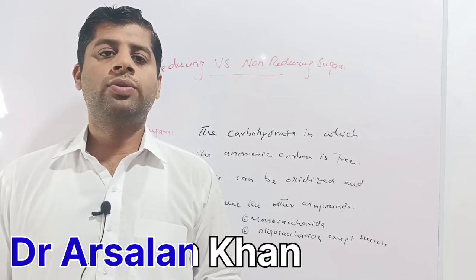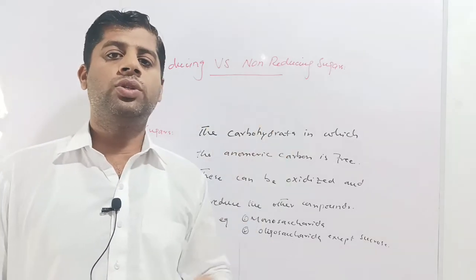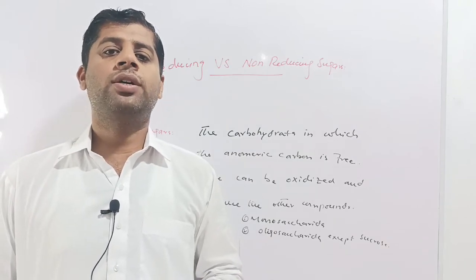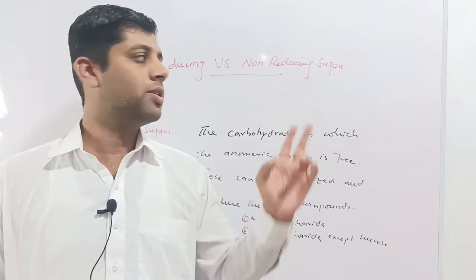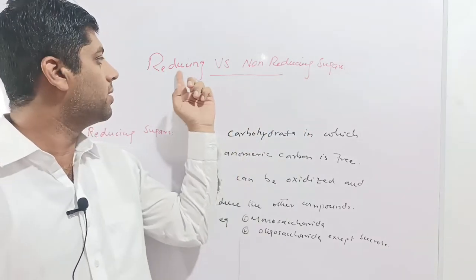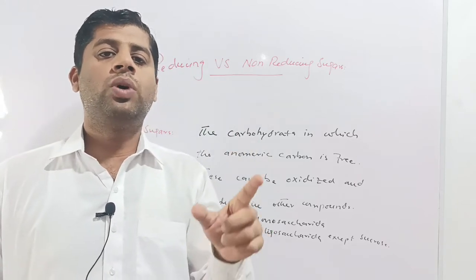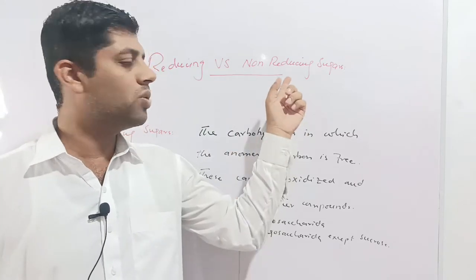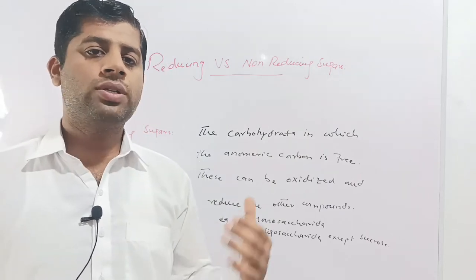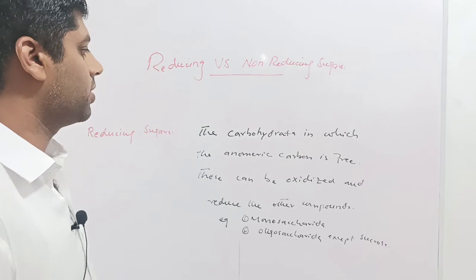Hi, I am Dr. Arsalan Khan and today we are going to clear a concept of reducing and non-reducing sugars. Carbohydrates are basically referred to as sugars and these are categorized into two classes: reducing sugars and non-reducing sugars. Reducing sugars can be oxidized and reduce other compounds, while non-reducing sugars cannot be oxidized and cannot reduce other compounds.